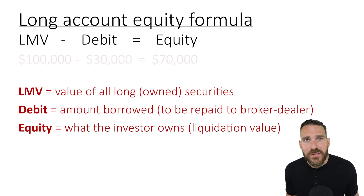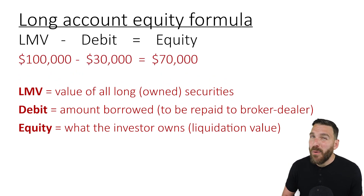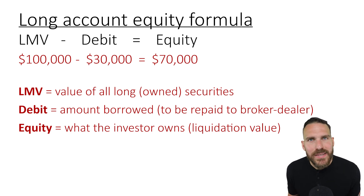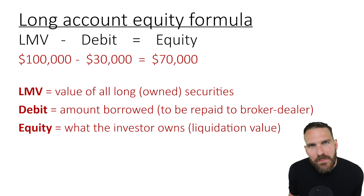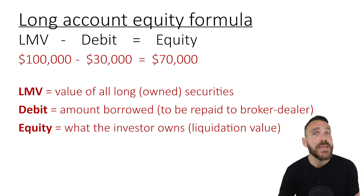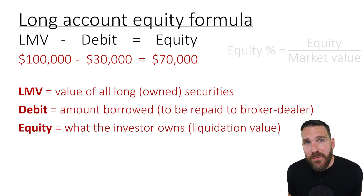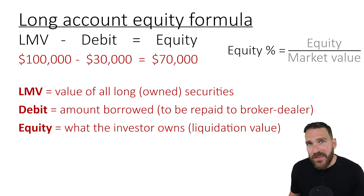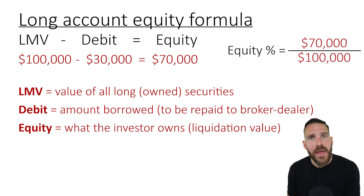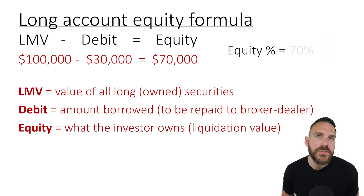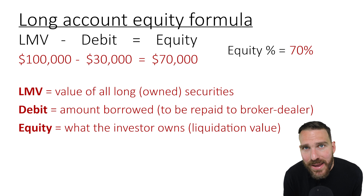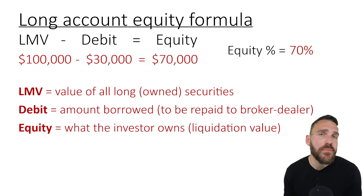For example, if an investor has a $100,000 market value of securities but has borrowed $30,000 from their broker-dealer — that's their debit balance — their equity would be $70,000. If you have a $100,000 account but owe $30,000 back to the firm, you really only own $70,000. You can also calculate the equity level by dividing equity by the long market value: $70,000 divided by $100,000 gives a 70% equity level. Regulation T requires investors to initially establish positions with at least a 50% equity level, and this account is well above that mark.